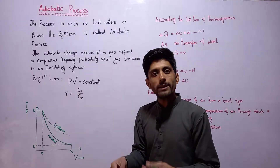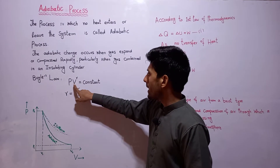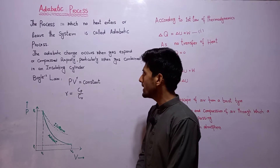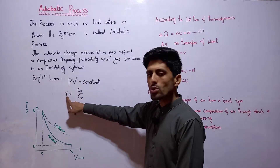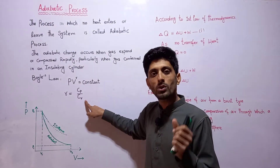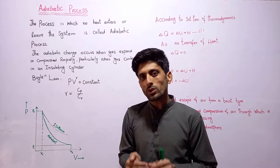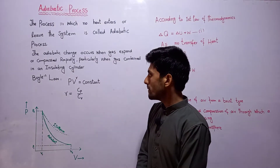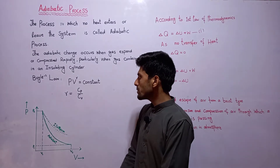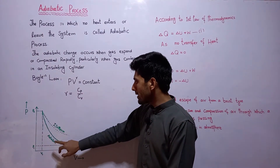So according to walls in case of adiabatic process, Boyle's Law can be written as the product of pressure into volume to the power gamma: PV^γ = constant. This is the relation for Boyle's Law in case of an adiabatic process. Here gamma (γ) is the ratio of Cp over Cv — the molar specific heat at constant pressure to the molar specific heat at constant volume. Gamma is a gas constant; it is a ratio specific to each gas. Next, if we talk about the PV diagram for the adiabatic process, we observe the pressure-volume curve.